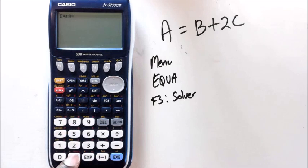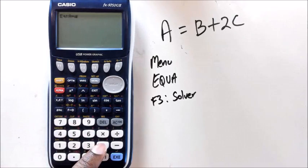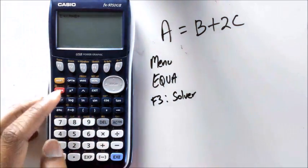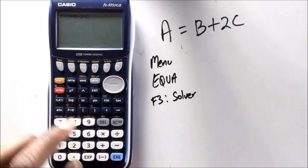Equals is actually above your decimal point there. So you want to press Shift and the decimal point, that should equal Equals. Then Alpha B, then Alpha B plus 2 times Alpha C which happens to be there.